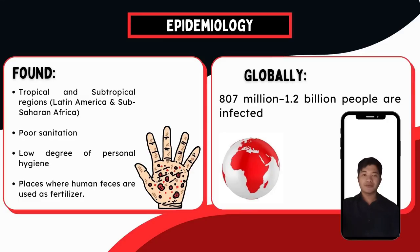The parasite is found worldwide, but is more frequently found in tropical and subtropical regions, including Latin America and sub-Saharan Africa. Ascariasis is frequently found in areas that are poorly sanitized, have a low degree of personal hygiene, and places where human feces are used as fertilizers.